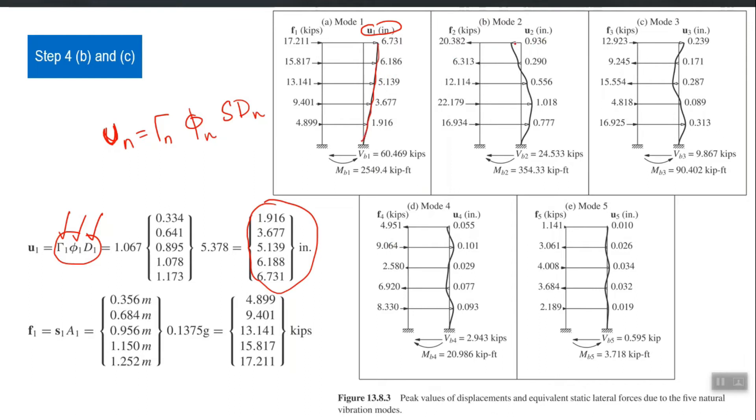Similarly, you calculate u2, u3, u4, u5 using that same expression. This is step 4b. 4c is that you calculate the equivalent static forces. And the expression was that f vector, f_n vector, is gamma n times mass matrix times phi n times s_a_n.